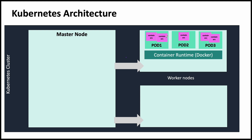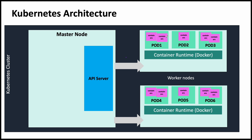Who controls the creation, termination, and replication of these pods? That is done from the master node. The first component in the master node is the API server, which is the entry point into the master node. The API server is the interface with the rest of the cluster — it interfaces with other components inside the master node as well as with components in the worker nodes. It provides a RESTful API. Then we have the Scheduler. The Scheduler is the one which decides, when you are launching a new pod, in which worker node it should be created — that is decided by the Scheduler based on the available resources in the nodes.